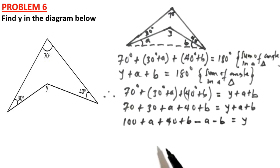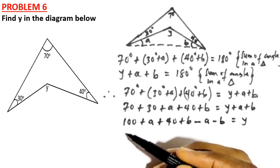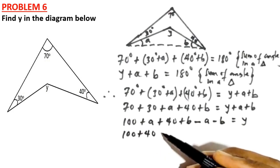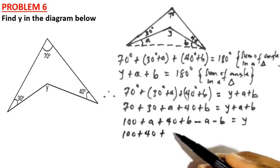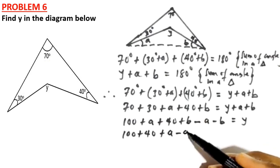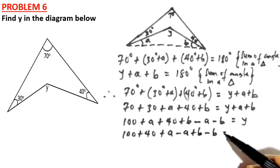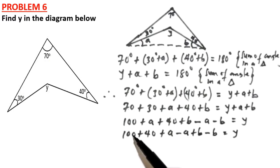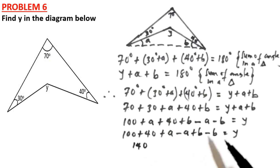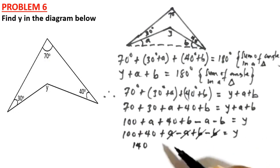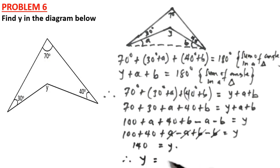Rearranging: 100 + 40 = 140, and a − a cancels, b − b cancels. Therefore y = 140°. The value of y is 140°.